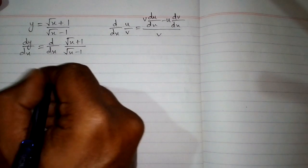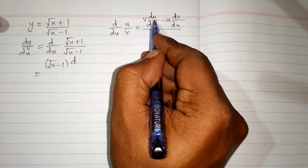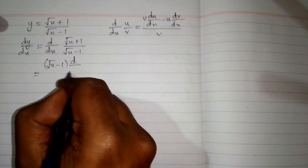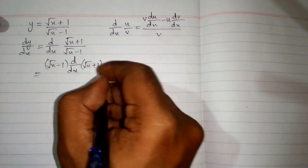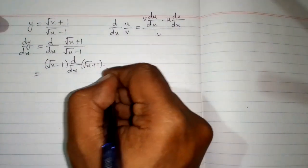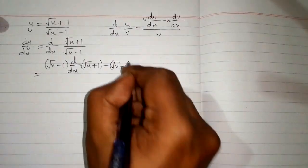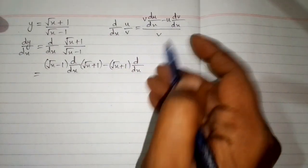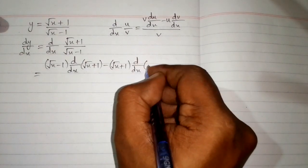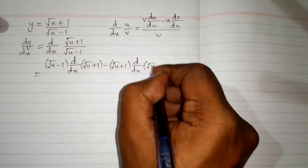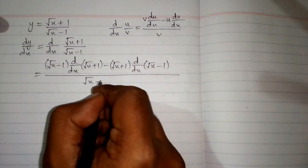So first we will write v which is square root of x minus 1, then the derivative of u. So we will write the derivative of square root of x plus 1 minus u, where u is square root of x plus 1, and then the derivative of v, which is d by dx of square root of x minus 1, upon square root of x minus 1 squared.